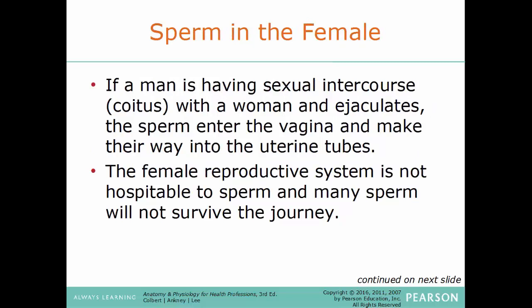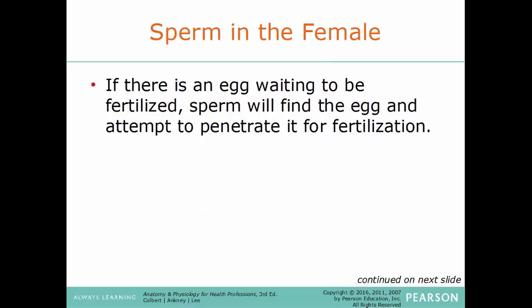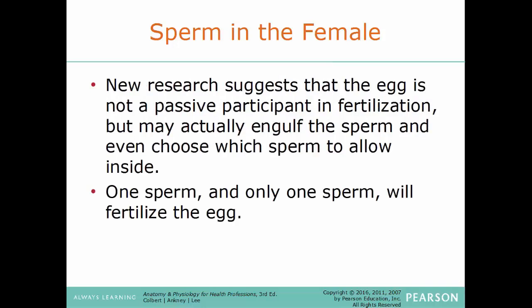If a man ejaculates during intercourse, sperm enter the vagina and make their way to the uterine tubes. The female reproductive system is not very hospitable to sperm and many die immediately. If an egg is waiting, a sperm will find and attempt to penetrate it for fertilization. New research suggests the egg is not a passive participant — it may actually engulf the sperm and even choose which sperm it allows to fertilize it. Only one sperm cell will fertilize the egg; after this, the fertilized egg forms a shell on the outside to prevent other sperm from entering.